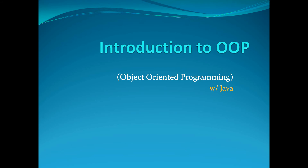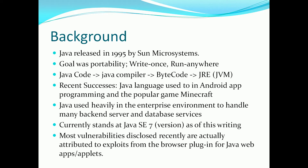I put together a quick PowerPoint presentation which I'll go over with you, and to begin with we'll get into the background of Java. Java was released in 1995 by Sun Microsystems and it is now owned by a company called Oracle. The goal of the language at first was mainly for portability — they wanted you to be able to write your code once and run it anywhere, and in doing so hopefully reach a much wider audience than you would if you had developed for one particular platform such as Windows.